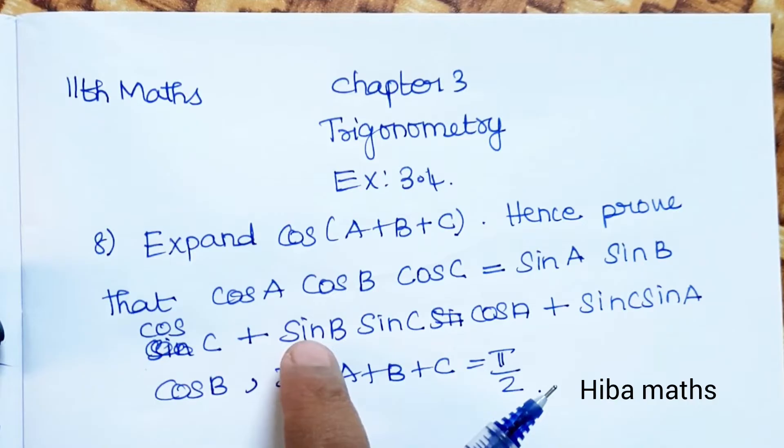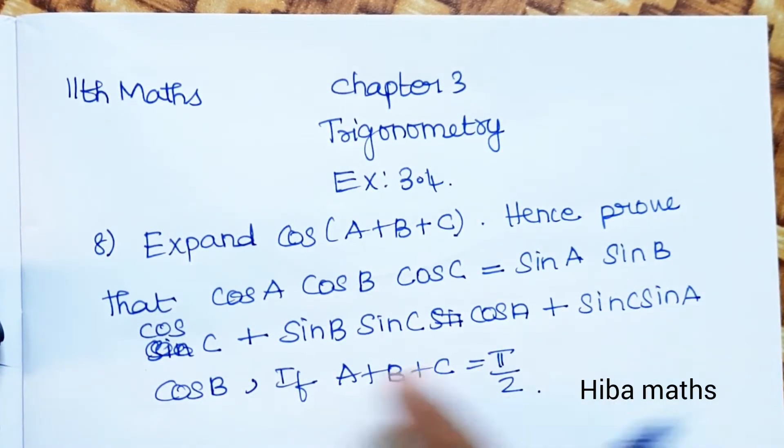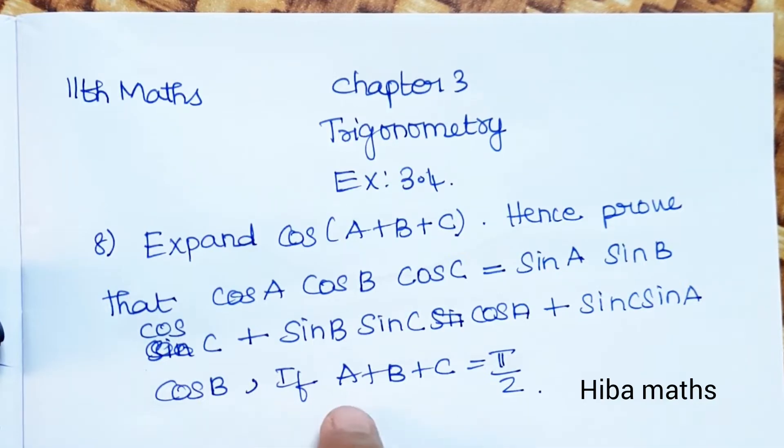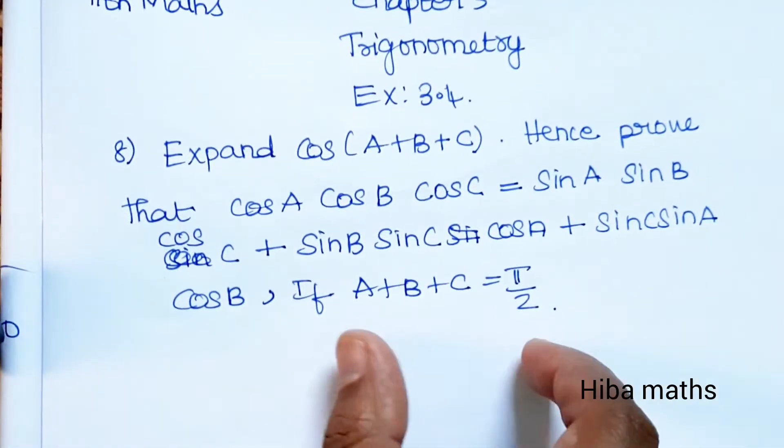Plus sin C sin A cos B, if A+B+C is equal to π/2. So in this condition you can get the proof. To solve that, cos(A+B+C) expand.